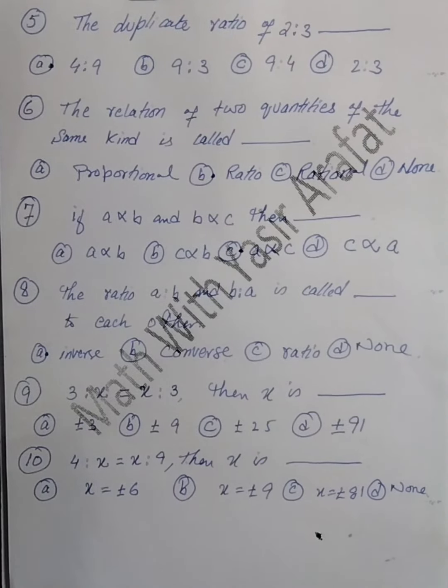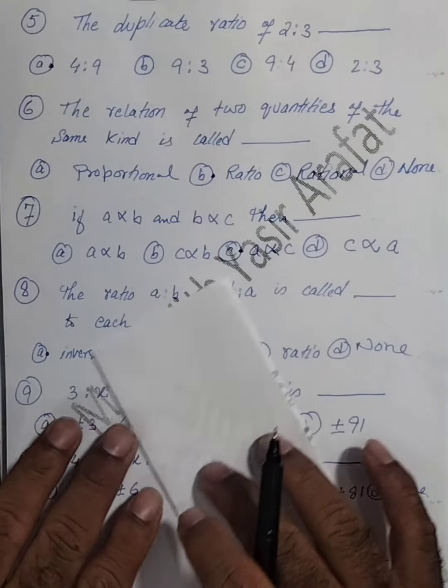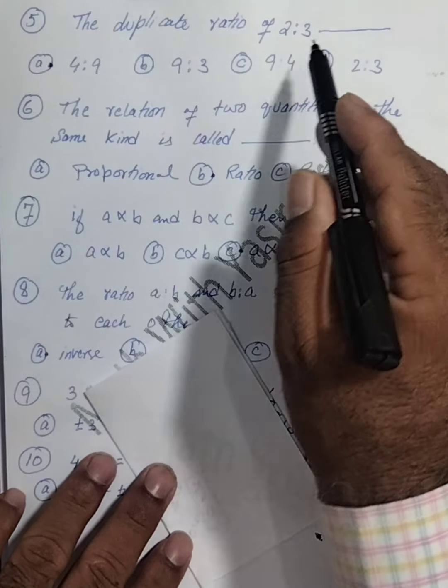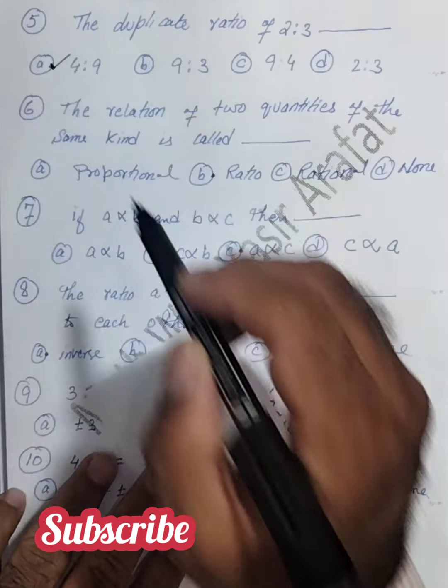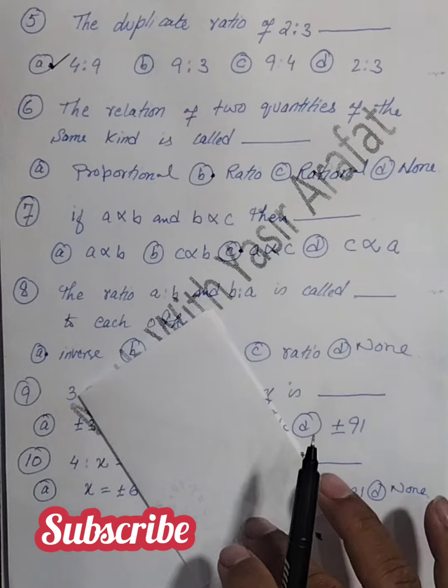Now come to the fifth MCQ here. The duplicate ratio of 2 ratio 3, it will be equal to option a is correct here.